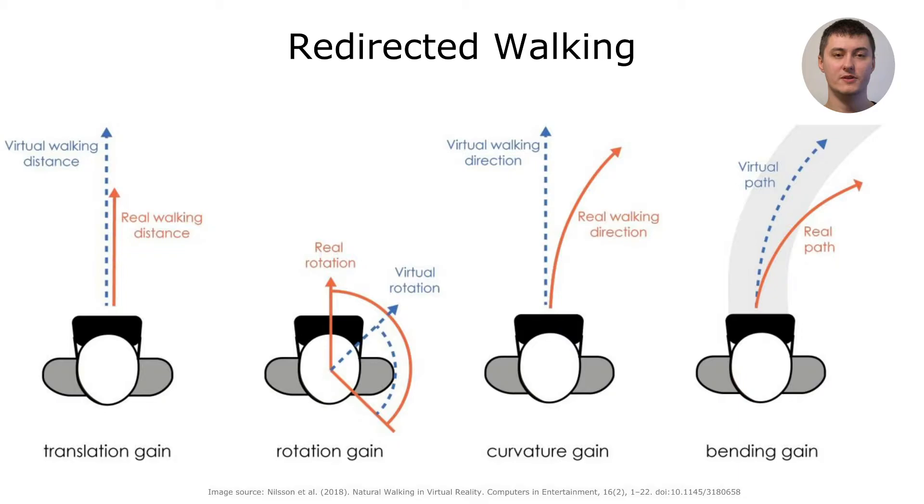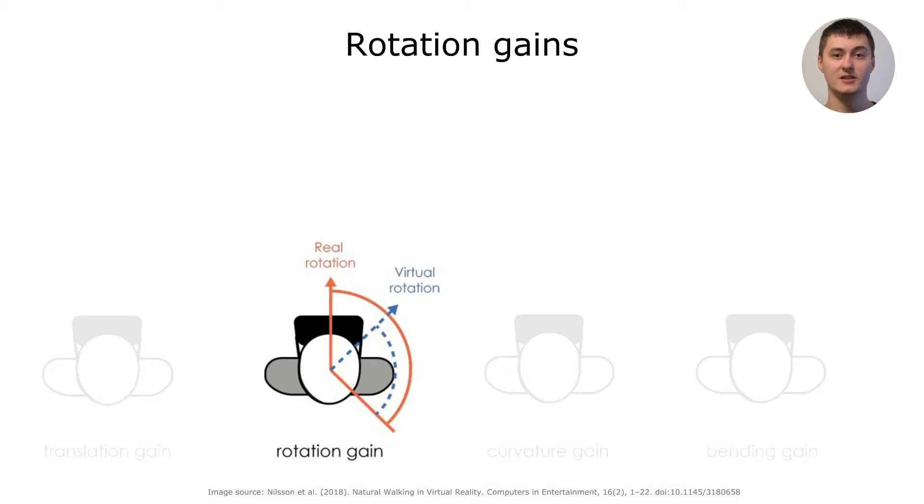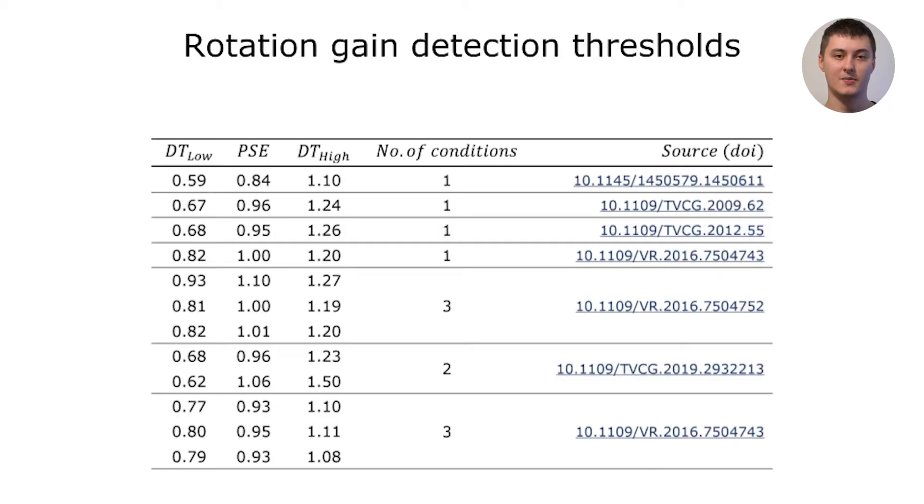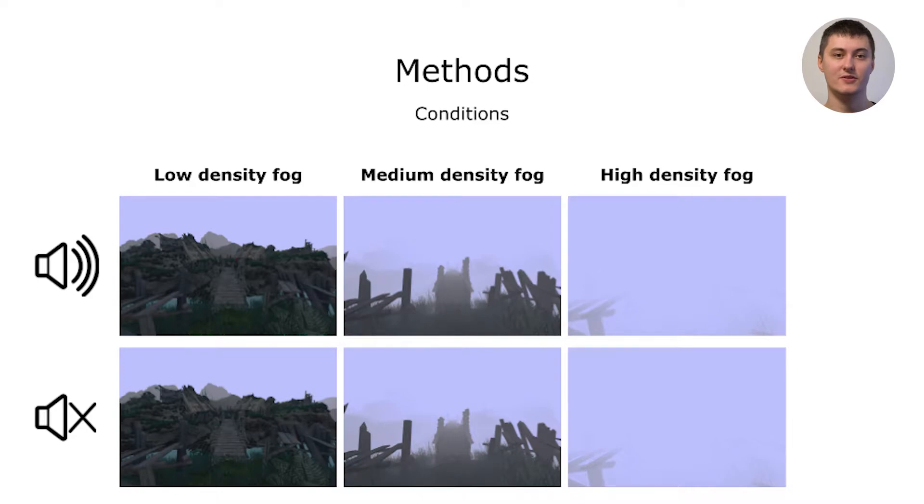While there are other techniques available for redirected walking, this study focuses on rotation gains, which is a subtle, continuous reorientation technique. A rotation gain scales the user's rotation, either increasing or decreasing the amount of virtual rotation in respect to physical rotation, and detection thresholds indicate whether the applied gains are noticeable to users. Prior research has estimated detection thresholds of rotation gains, however research on the influence audition might have in this regard is scarce. Therefore this study estimates detection thresholds for audiovisual rotation gains in a virtual environment with a rich soundscape and varying degrees of visual information, to potentially reveal any influence audition might have.